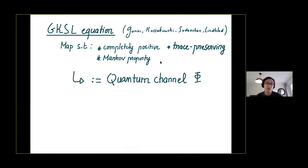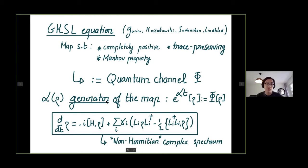For instance, quantum channels include projective measurements, which is a valid quantum operation. What is nice is that you also have a very generic way of writing the generator of such a map. By generator, I mean that by taking the exponential map of L with a time variable and applying it to rho, I generate my quantum channel. This L operator is what is called the Lindblad operator, and it's given in general by this expression. Here you recognize the part that you would get if you had only unitary evolution, and here is the new part which gives you the non-Hermiticity of the system, since this added part can make the spectrum of this Lindbladian have complex eigenvalues.